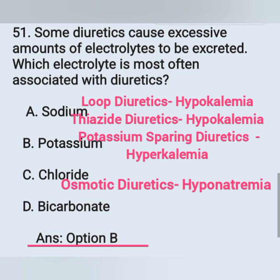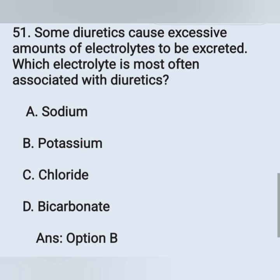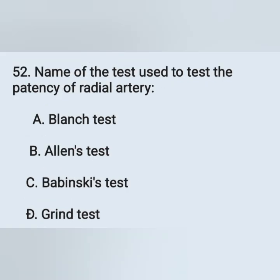Diuretics include loop diuretics, osmotic diuretics, potassium-sparing diuretics, and thiazide diuretics. Loop diuretics and thiazide diuretics cause hypokalemia, potassium-sparing diuretics cause hyperkalemia, and osmotic diuretics cause hyponatremia.